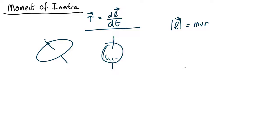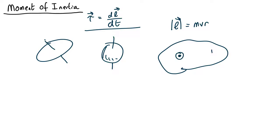If you have some complicated shape with an axis that we're rotating about, what we could do is divide it into pieces. For each little chunk, we can work out how far that chunk is from the centre and how fast it's going. The angular momentum of that little bit is m times v times r, and we sum that over the whole object, adding up the mvr for each piece.